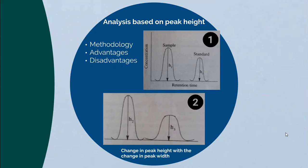The first method is analysis based on peak height. The measurement of the height of a peak is a common method of quantification. The height of a peak is measured by drawing a baseline on either side of the peak, and then dropping a perpendicular on this baseline from the top center of the peak. The measurement of this perpendicular distance for the reference standard (h1) as well as for the separated compounds (h2) helps in finding the actual concentration of the separated compound.